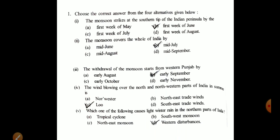The wind blows over the north and north-western part of India in summer. Number five: Which one of the following causes light winter rain in the northern part of India?